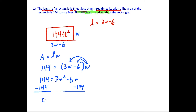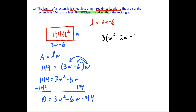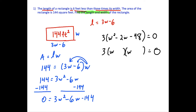Our resulting quadratic equation is 0 equals 3W squared minus 6W minus 144. We can factor out a 3, giving us 3 times (W squared minus 2W minus 48) equals 0. Since 144 divided by 3 is 48, we have minus 48 inside the parentheses.